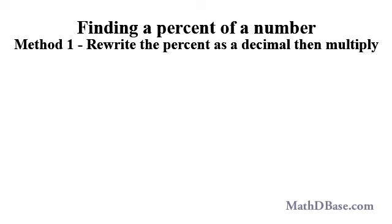We will discuss three ways to find a percent of a number. In this context, the word of means multiply. In the first method, rewrite the percent as a decimal, then multiply that decimal by the number.